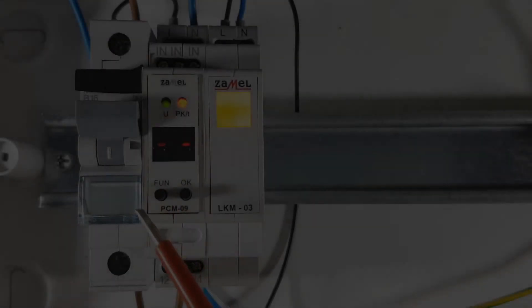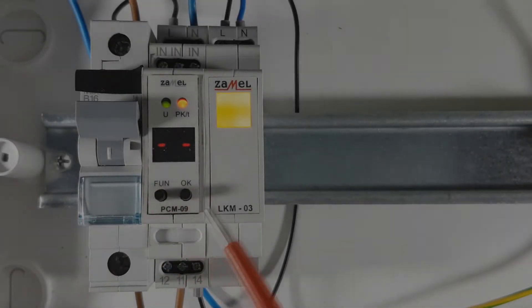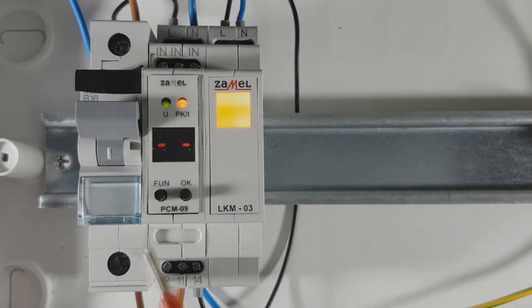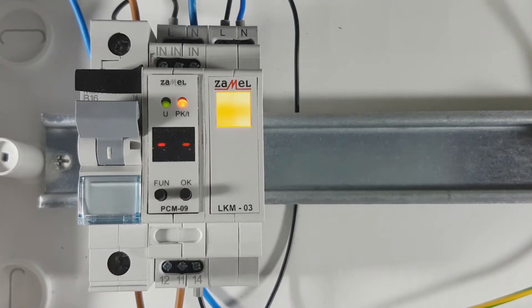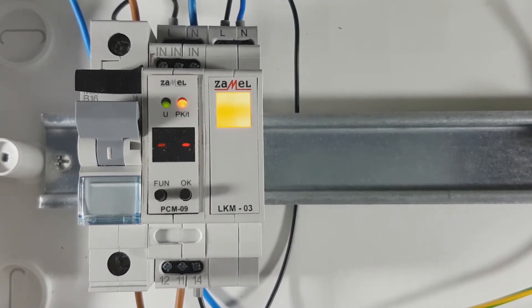On the front panel of the device there are two buttons used for setting the device. The function button marked as FUN is used to select the relay operating mode and set the times counted down by the relay. The OK button is used to confirm the settings.